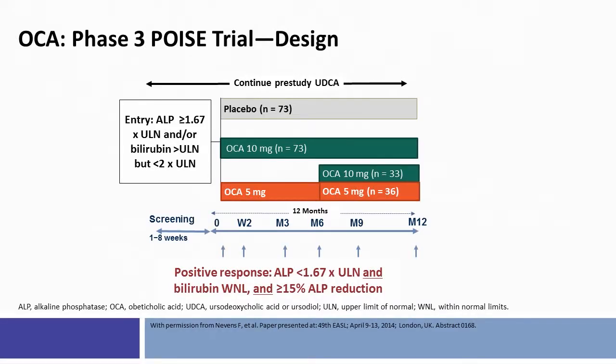With this rationale, the POISE trial—a phase 3 trial that led to the approval of obeticholic acid for treatment of PBC—was designed to evaluate three arms: a placebo arm, a 10-milligram arm, and an arm that started with 5 milligrams of obeticholic acid and then up-titrated at six months to either 5 milligrams or 10 milligrams, depending on response.